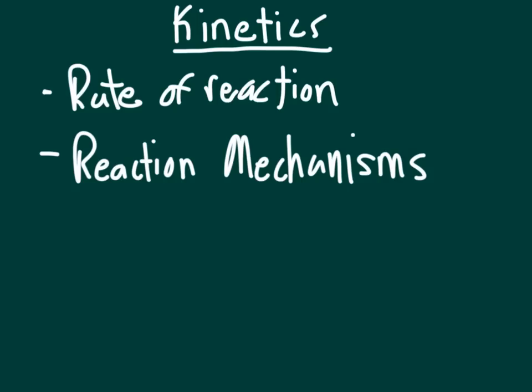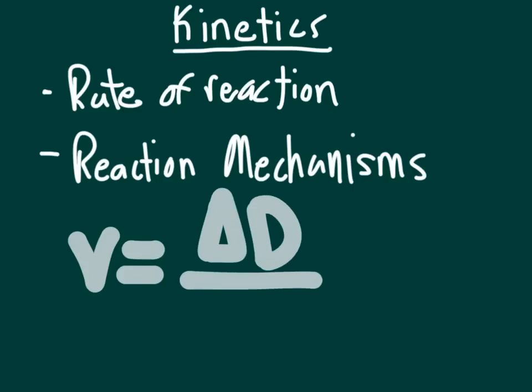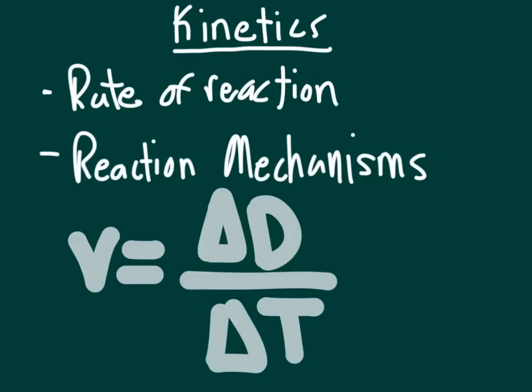Chemical kinetics refers to the study of the rates of chemical reactions and the mechanisms by which they occur. The rate of a reaction is the change in concentration of a product or reactant over a unit of time. Similar to how velocity is a change in distance over time, reaction rate is the change in concentration over time. The entire theory of kinetics revolves around how particles of reactants interact to form products. We are also going to talk about reaction mechanisms, but that will be later in the lesson.